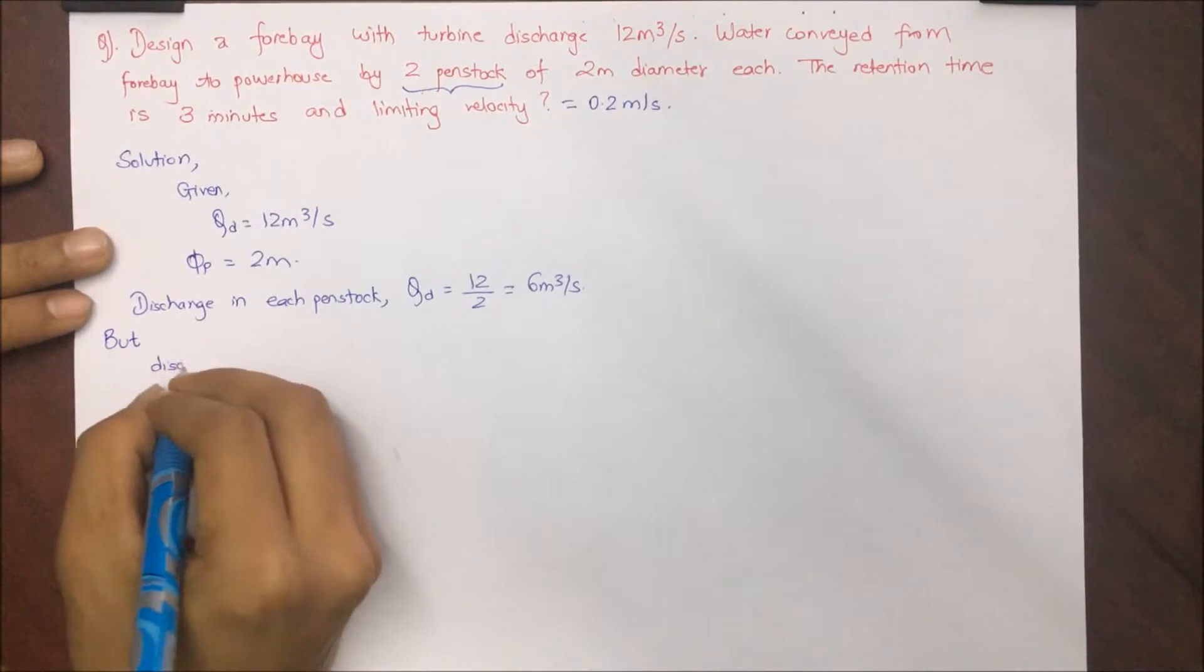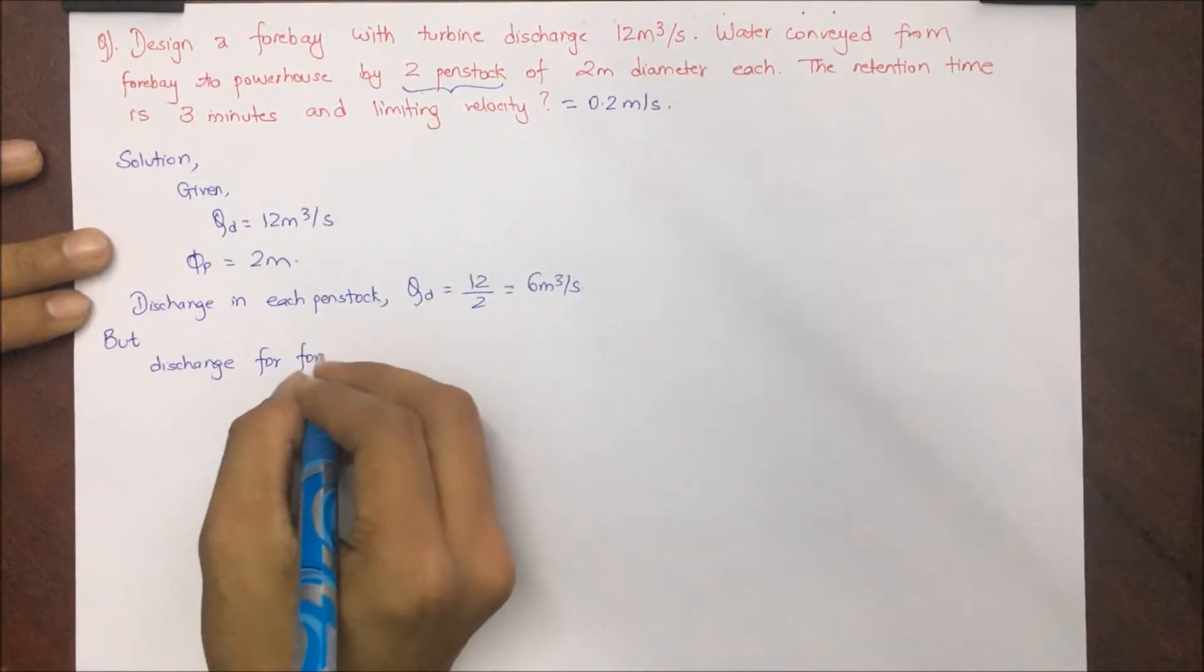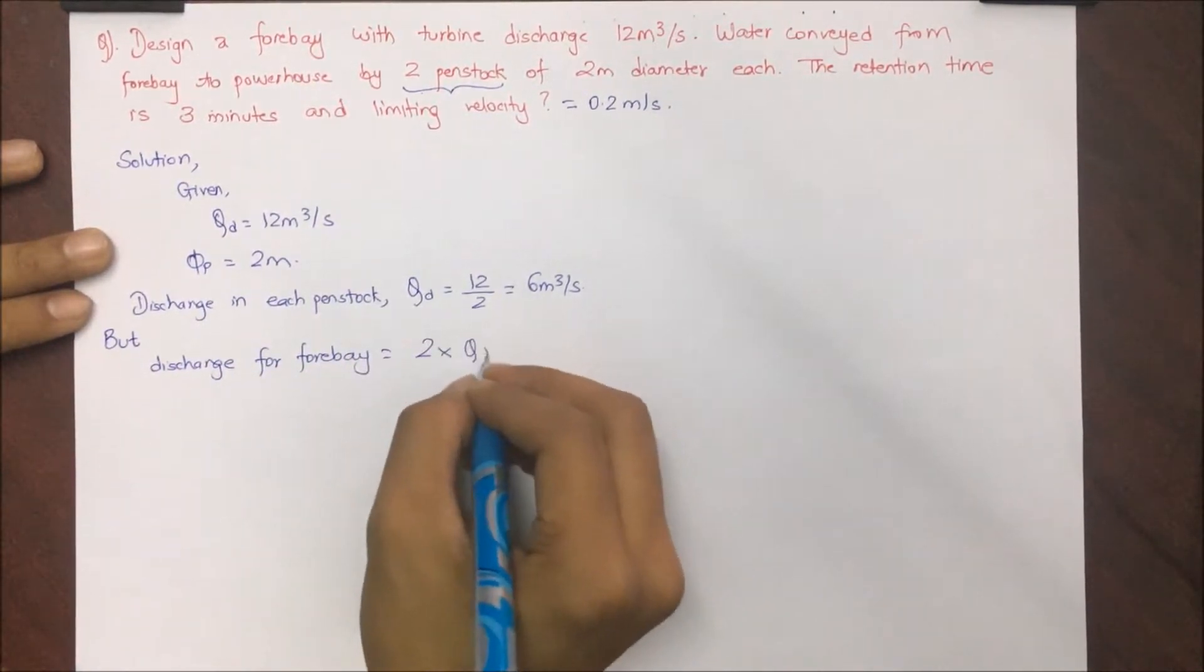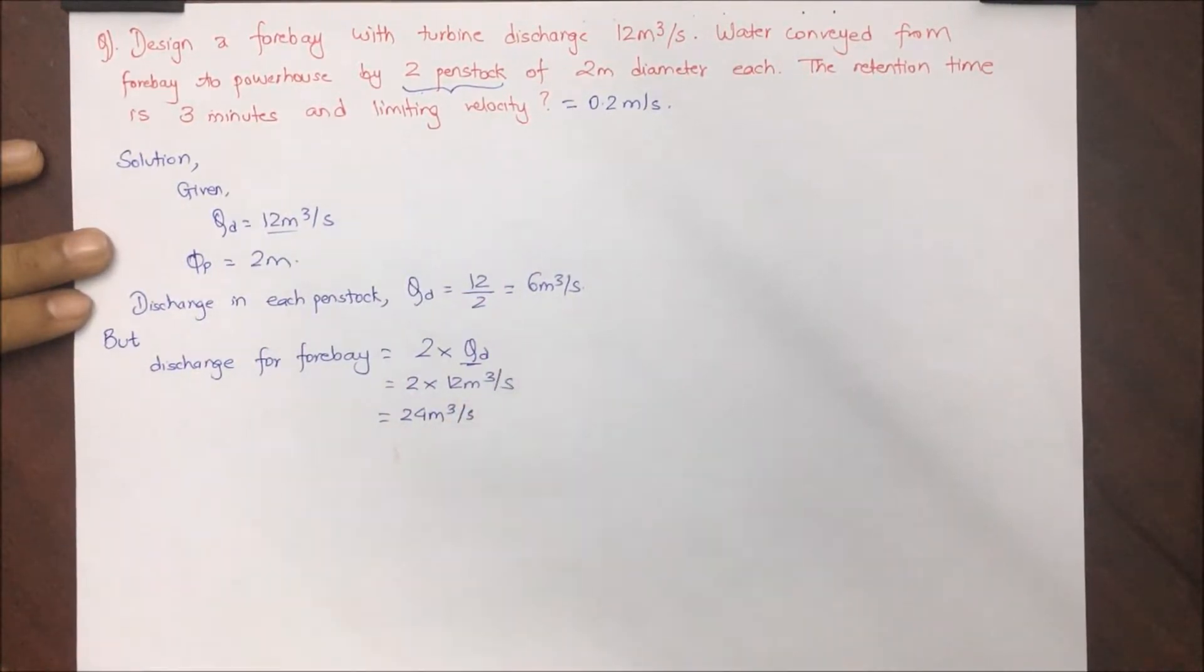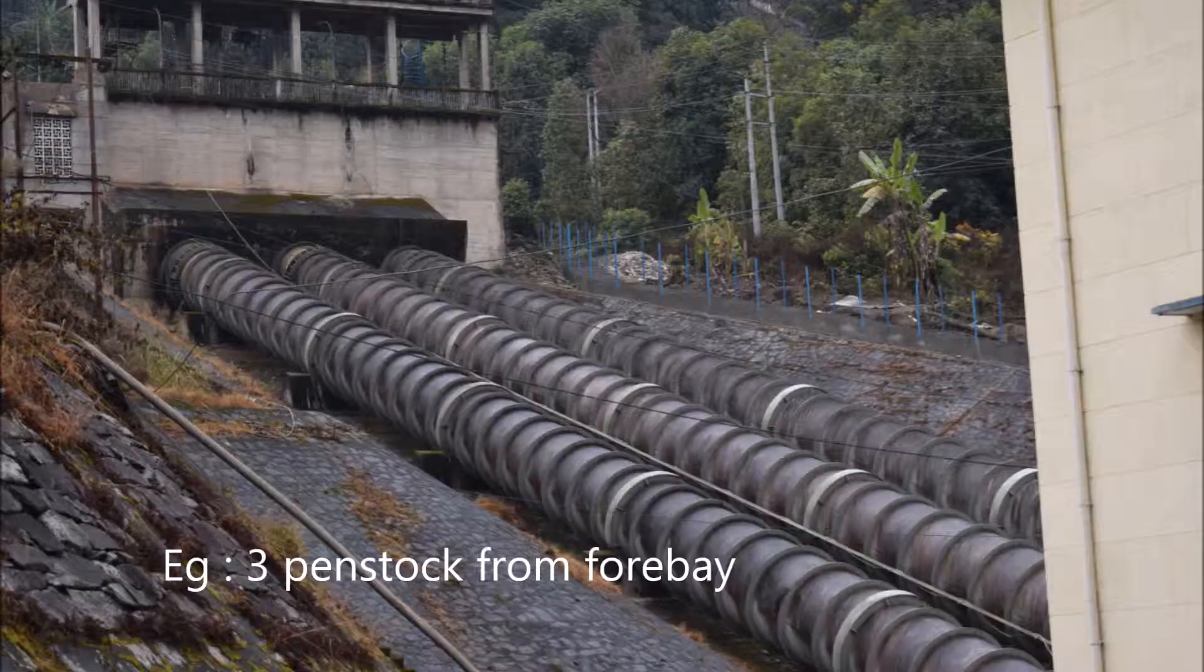Discharge in each penstock: the discharge will be divided so 12 by 2 equals 6 meter cube per second. But discharge in forebay will be twice the design discharge. Make sure you take 12 meter cube per second, not 6. So 2 into 12 meter cube per second gives 24 meter cube per second.